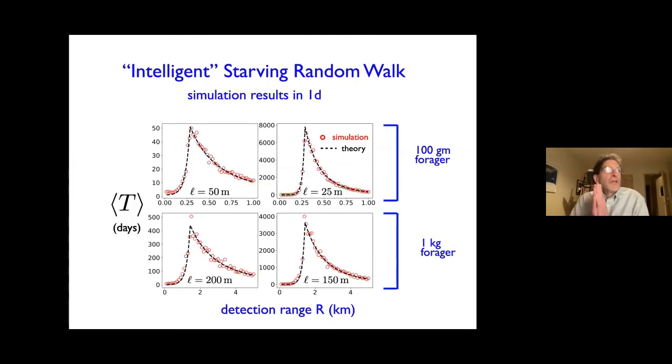But let me now just tell you what the results are. So the main point is that, indeed, there is an optimal lifetime that maximizes the—I mean, there's an optimal intelligence or optimal detection radius that maximizes the lifetime. So on the x-axis is the detection range. And the top slide is for 100-gram forager. The bottom slide is for 1-kilogram forager, where we're using biological parameters for these numbers. And here, L is the distance, the average distance between morsels of food—50 meters, 25 meters, 200, 150 meters. And here, the lifetime is measured in units of days. And one sees that in one dimension, there is excellent agreement between the theory that I have not shown you because there's not enough time. But it's the same calculations for the unintelligent forager with more details. And you see that the agreement between the simulation data and the theory looks pretty good.